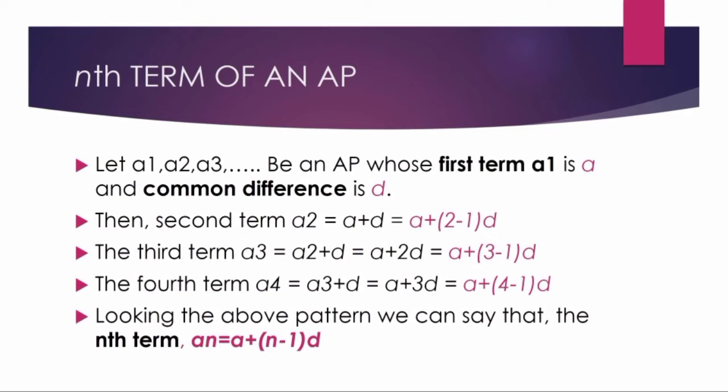From this pattern, the nth term formula is: A_n equals A plus (N minus 1) times D, where N is the number of terms. This is the general formula for the nth term of an AP.